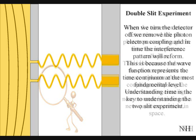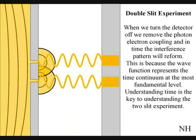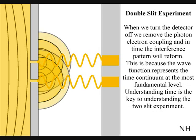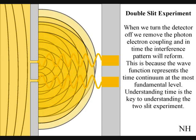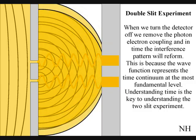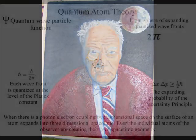If we turn the detector off we remove the photon electron coupling and in time the interference pattern will reform. Just like in Newton's first law of motion the interference pattern will continue to maintain its state unless acted upon by an external force.